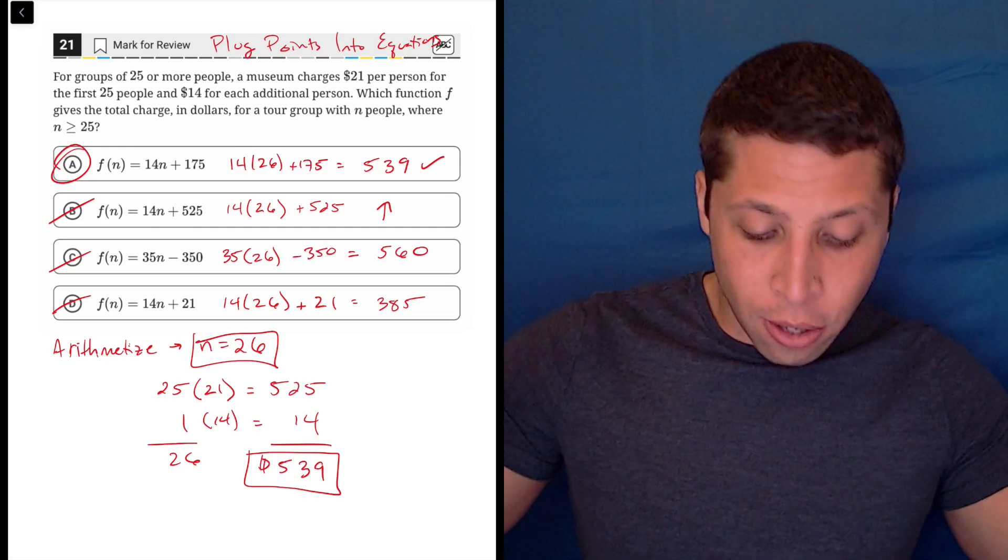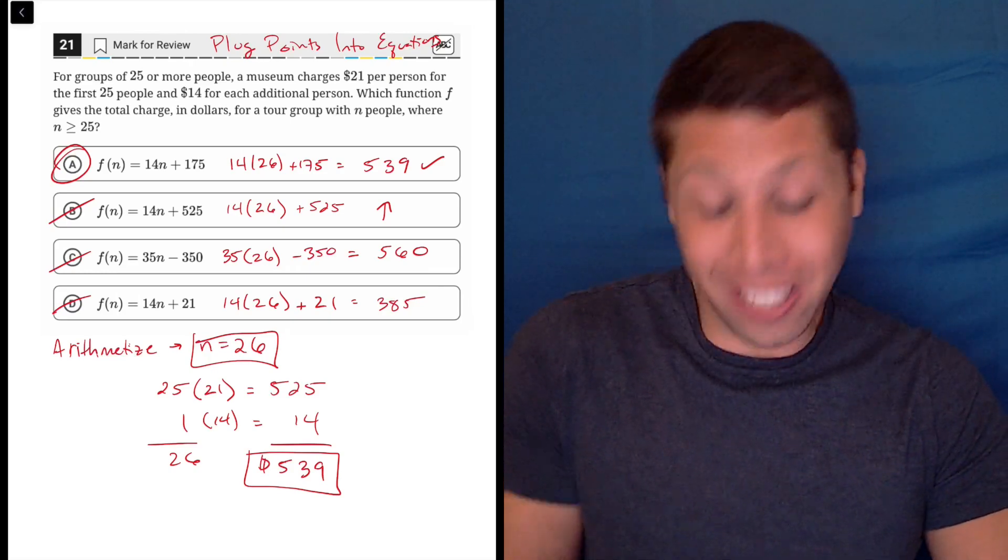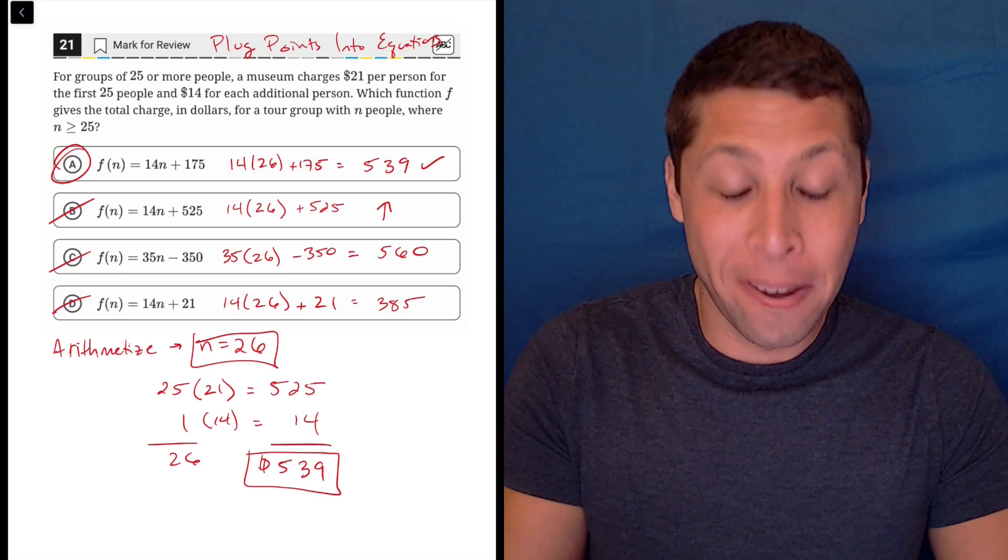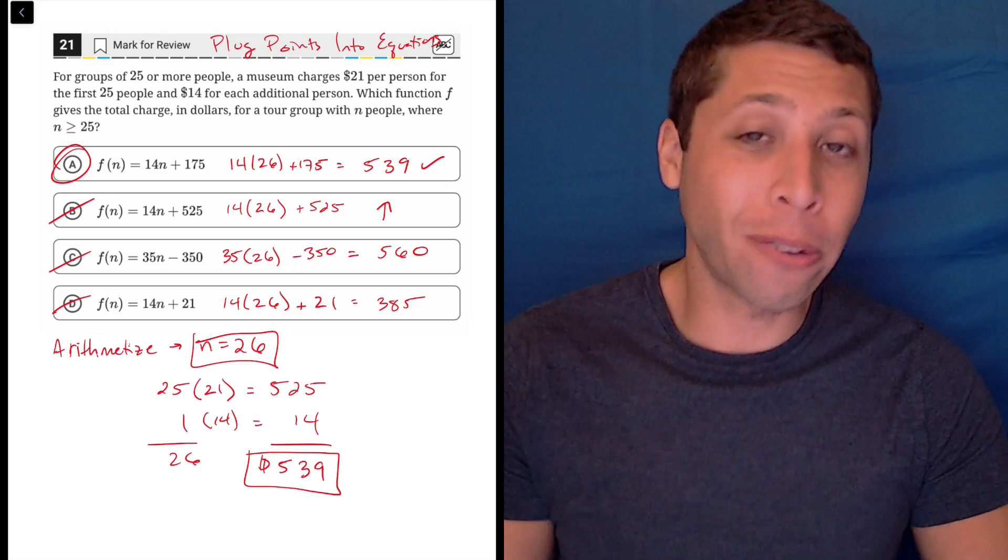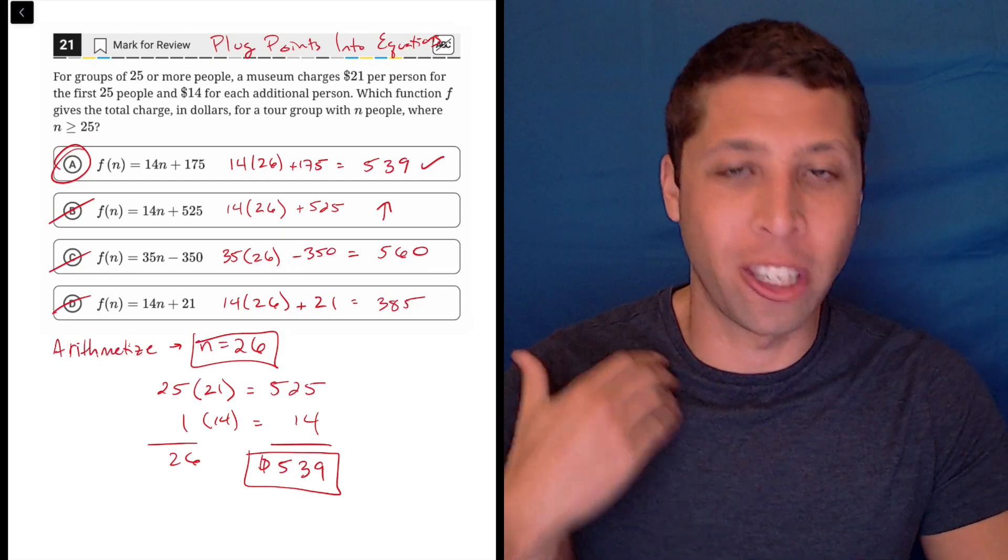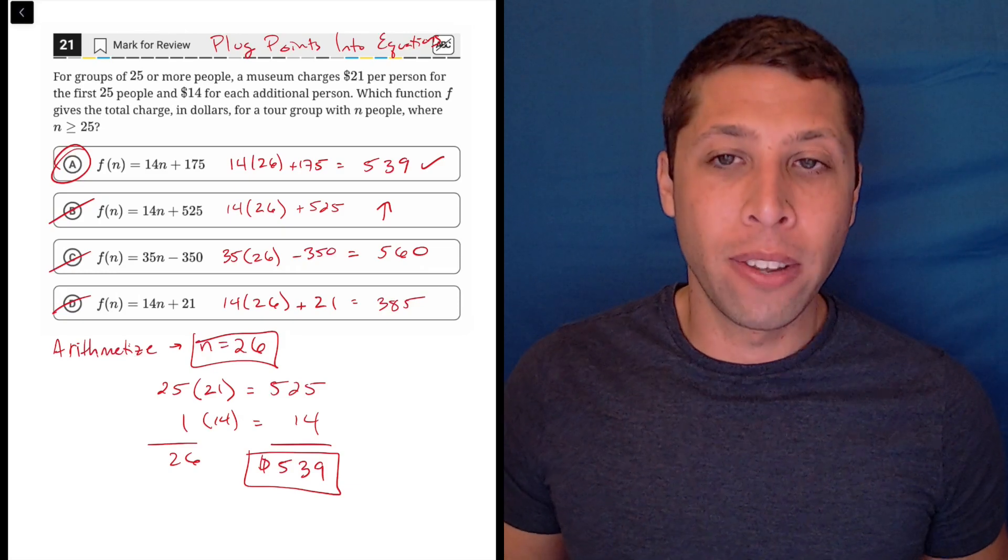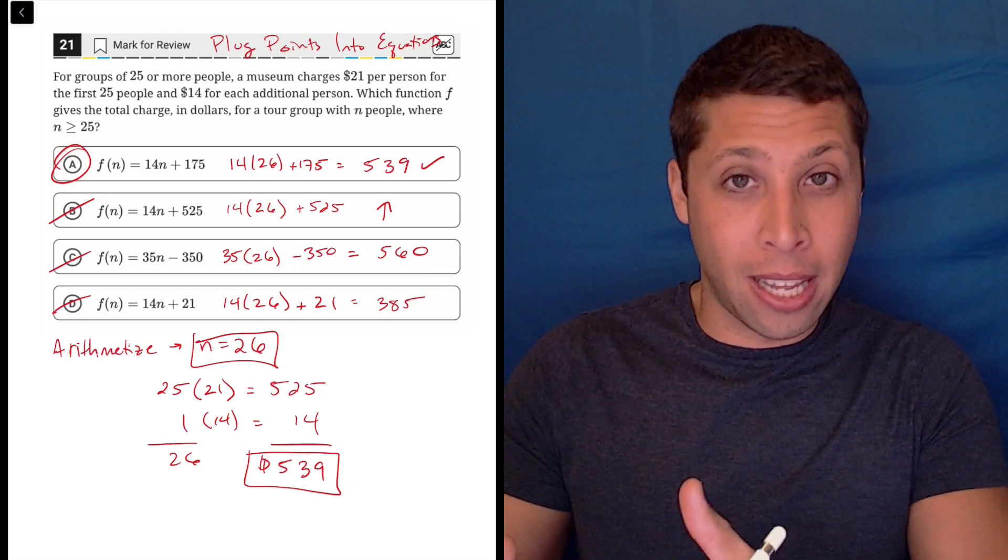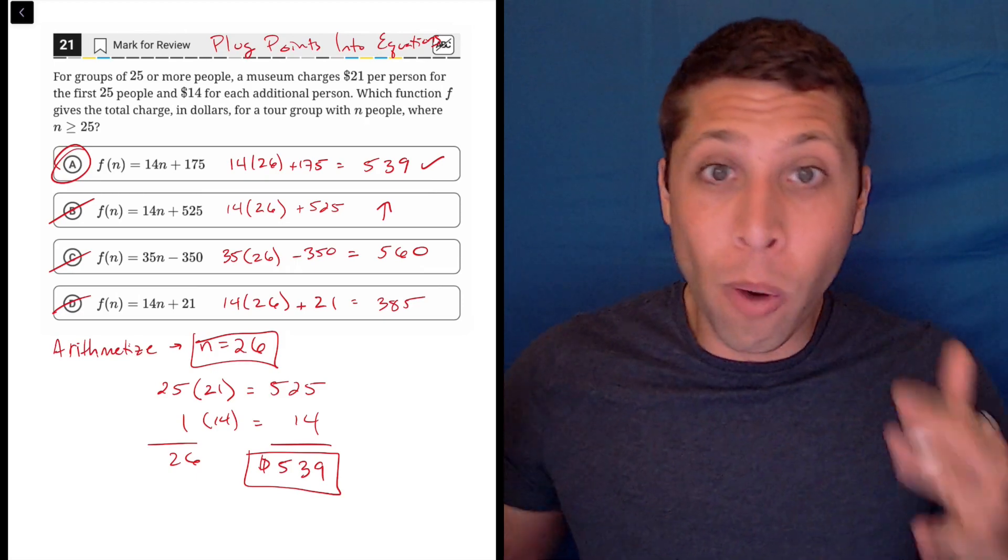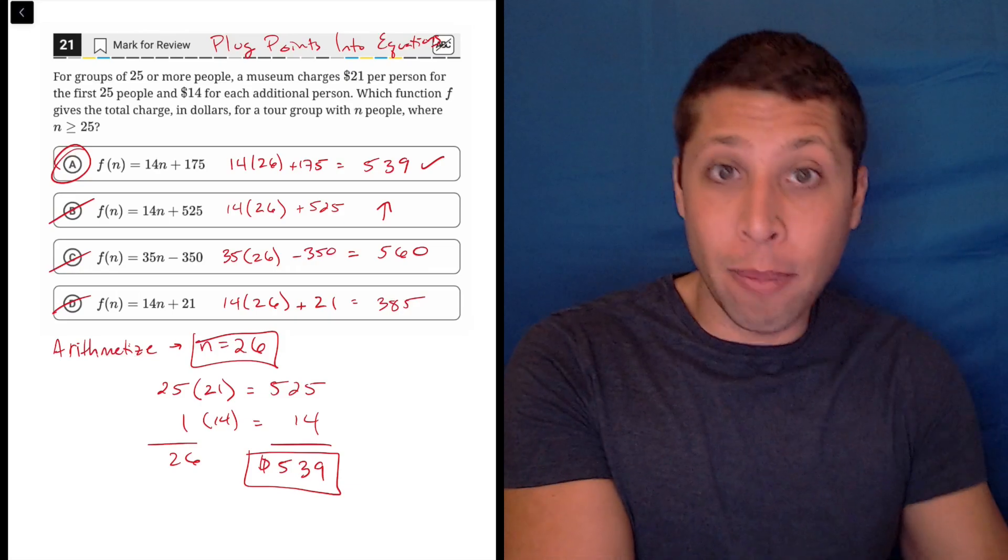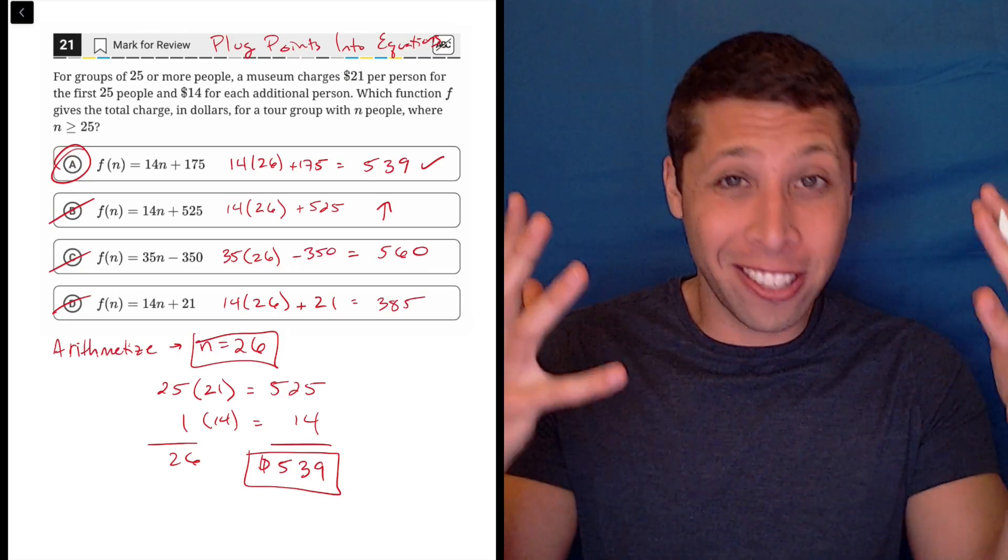Now I don't understand why this is the answer. Like the 14, I can kind of see cause that's in the question, but where's this 175 coming from? The short answer is I don't care. I never bothered to even ask myself that question. It does not matter to me because the equation took care of itself. I understood how much money a 26 person group was going to cost. Only one equation gave me the money that I would expect, gave me that amount. So that must be the right equation. I don't care why. I just care that it worked.